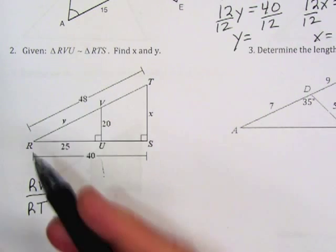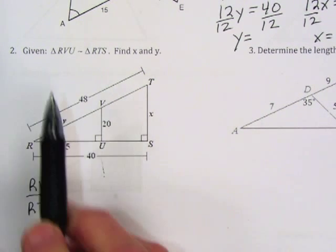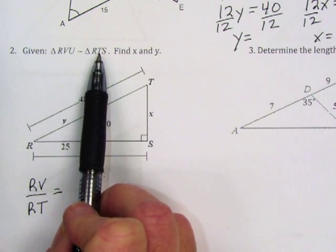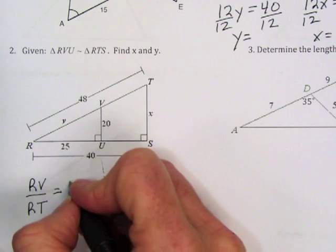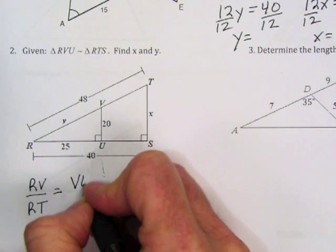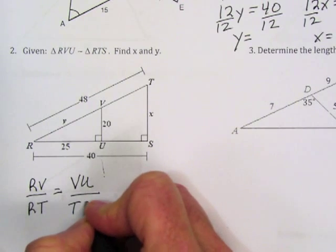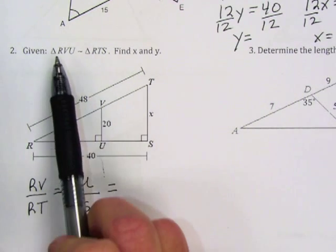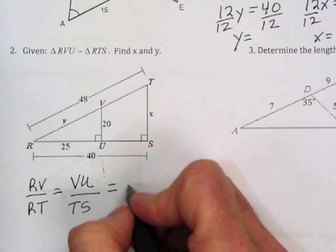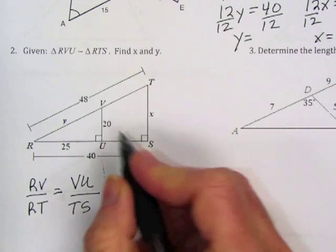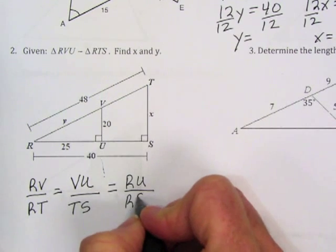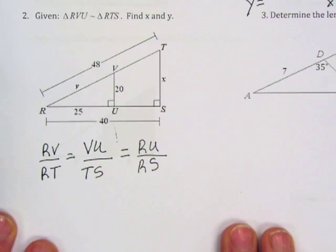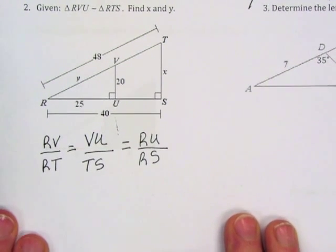So RV corresponds to RT. The next two, VU, is going to correspond to TS. So side VU corresponds to side TS. Third ratio, side RU is going to correspond to side RS. Once I know I have those correct, I can then fill in the information from my diagram.